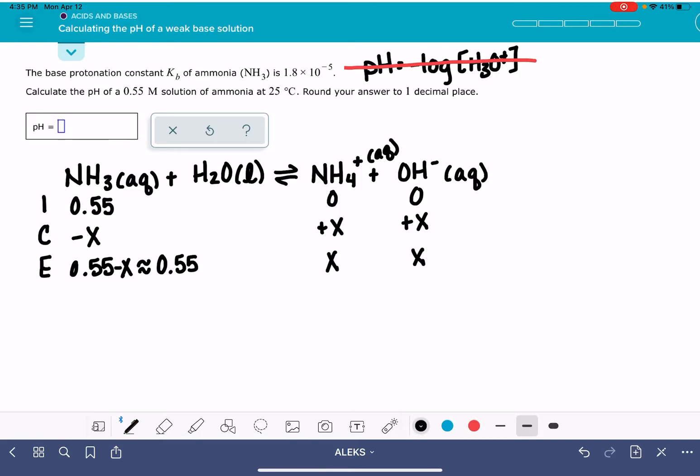What we can do is calculate the pOH. The pOH is the negative log of the hydroxide, OH-, and our ICE table does give us the OH- concentration right here. So we can calculate the pOH by taking the negative log of the value of X that we get from this ICE table.